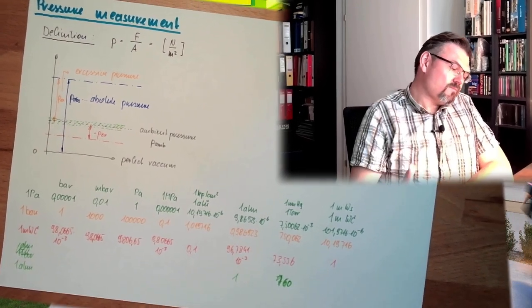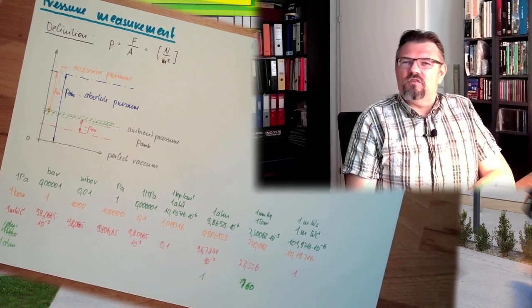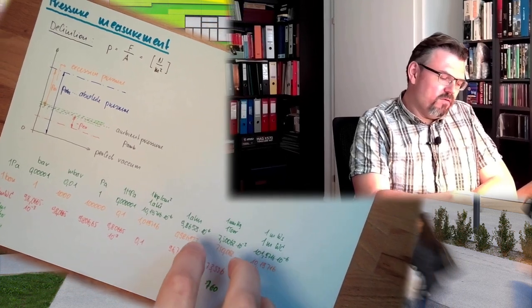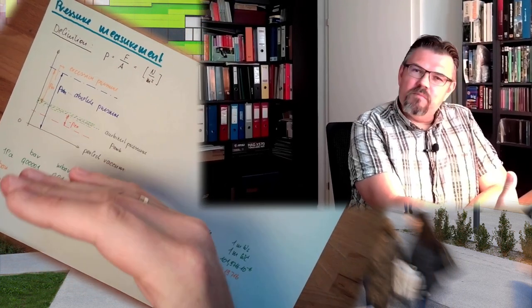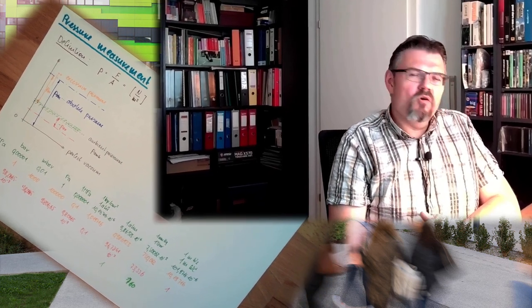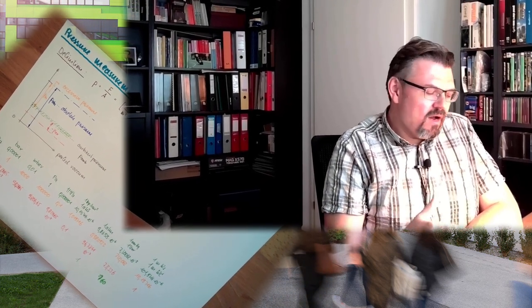So you see, it's not that easy. A lot of different units, a lot of different pressures, even absolute pressure, excessive pressure. I hope it's getting clear now. Usually we're talking about bars and excessive pressure. What different types of pressure measurements there are, we will start next time with a liquid pressure measurement, the approach Torricelli used. Next video. For this time, thank you very much for listening. Goodbye.